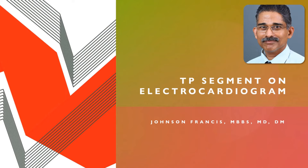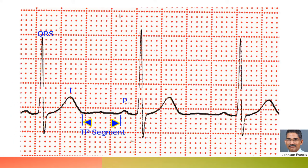The TP segment is the isoelectric interval on the electrocardiogram. It is the region between the end of the T wave and the next P wave, and it represents the time when the heart muscle cells are electrically silent. The TP interval shortens when the heart rate increases and vice versa. Ideally, elevation and depression of the ST segment and PR segment are measured with reference to the TP segment.